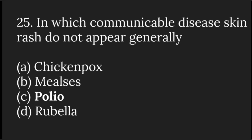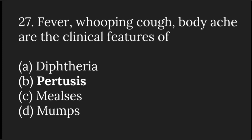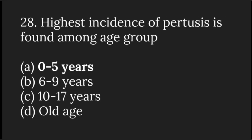In communicable diseases, skin rash does not generally appear in polio. Skin rashes are important clinical features of measles. Fever, whooping cough, and body ache are the clinical features of pertussis. The highest incidence of pertussis is found in the age group 0 to 5 years.